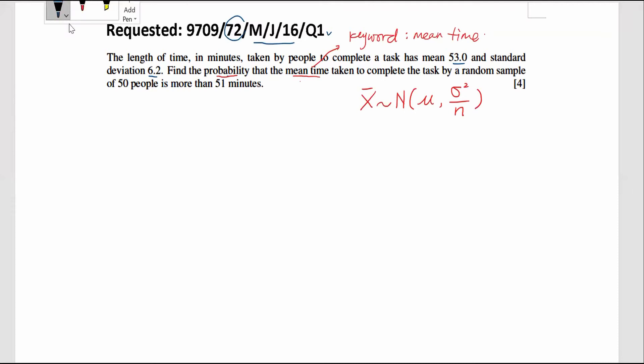Hence, for this particular question, the X-bar, the mean time, is following normal distributions with the mean given 53.0. And since the standard deviation is given, I will write it like this: 6.2 needs to be squared and divided by the sample size of 50 people.